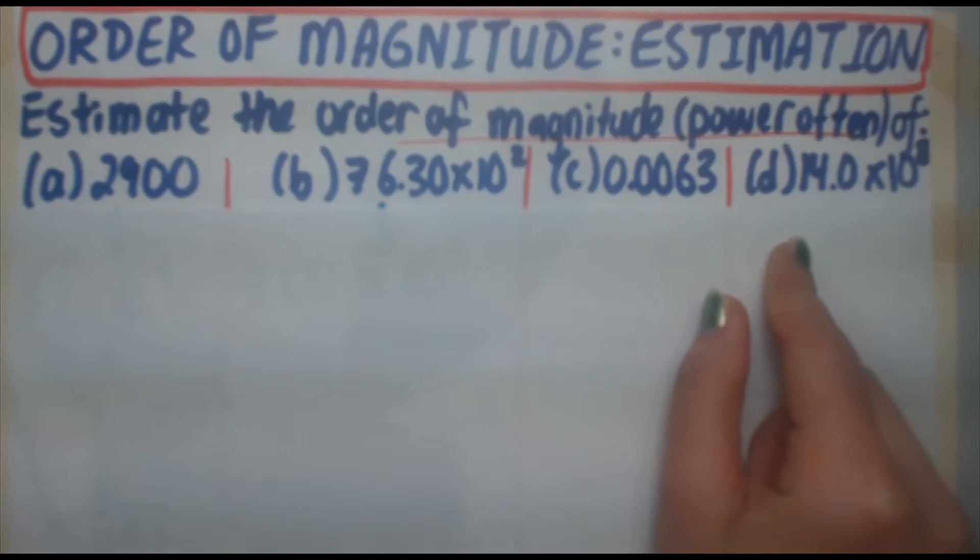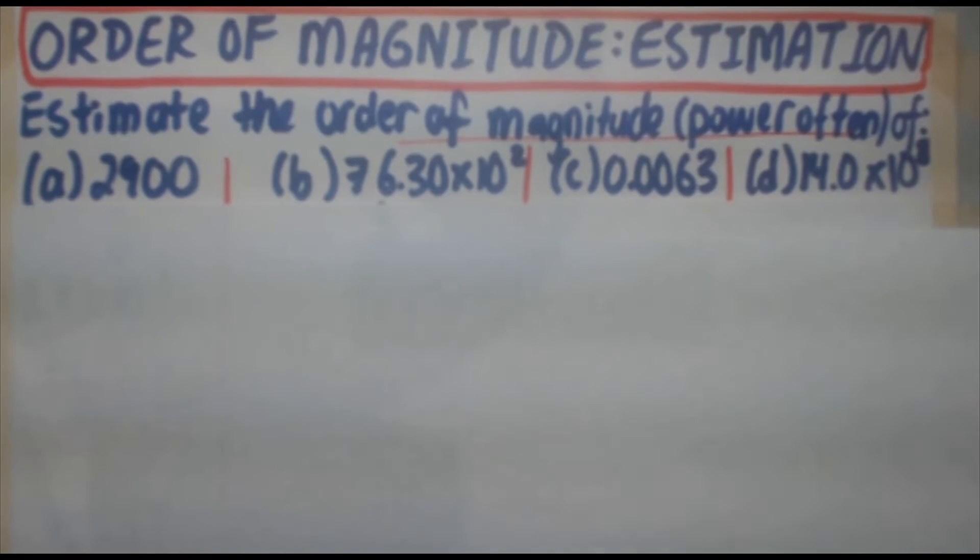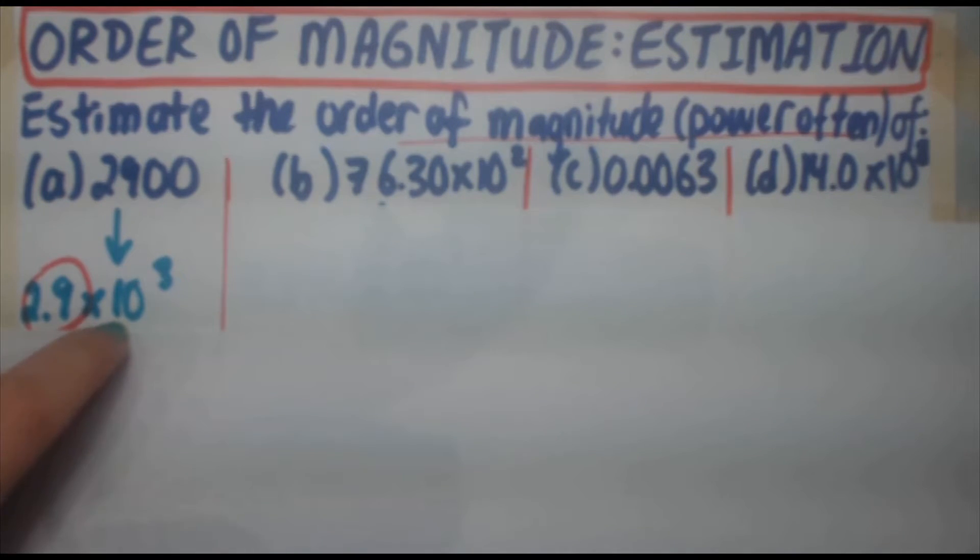So getting started with part A, there's a few things that you want to take a look at here. First thing you want to do is rewrite it in scientific notation. So you can write that as 2.9 times 10 to the 3. And you want to really look at that first number because order of magnitude comes down to this. You see how you've got a 10 to the 3 there? That's the order of magnitude.